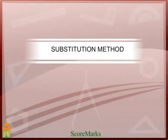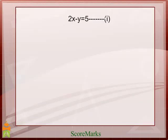In this method, we first find the value of one variable and substitute that value in the second equation. Let's understand with an example. We have the equations: 2x minus y is equal to 5, and 3x plus 2y is equal to 11.